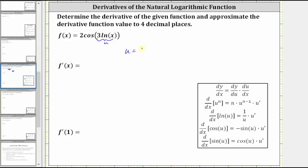If u is equal to three natural log x, then we can think of the original function as just two cosine u. And now before we find the derivative, we need to find u prime or du dx.